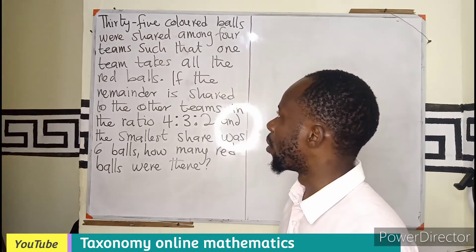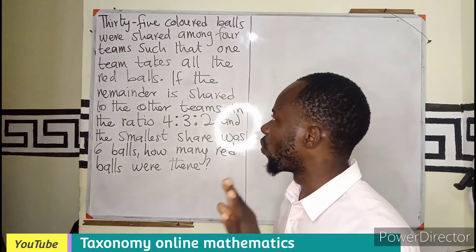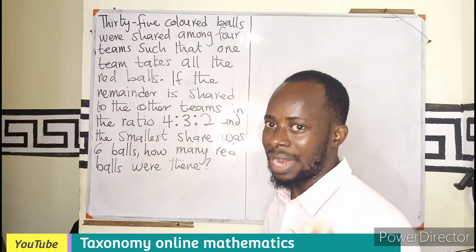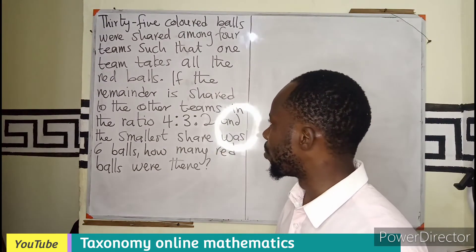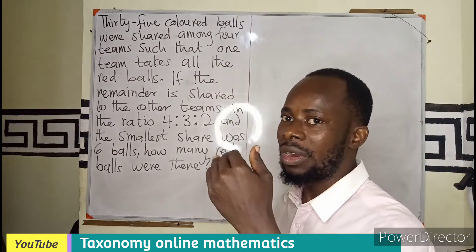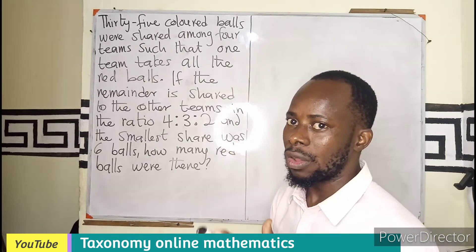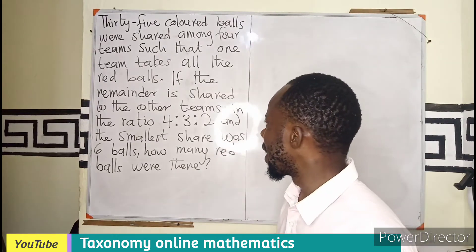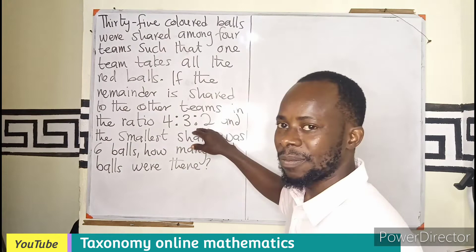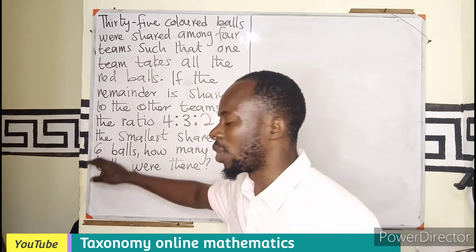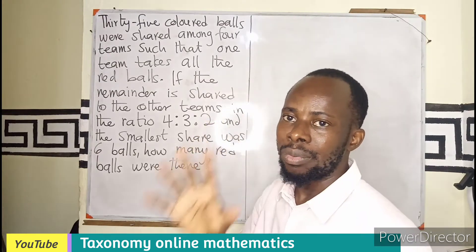Thirty-five colored balls were shared among four teams such that one team takes all the red balls. The colored are many, but all the red balls have been given to a particular team. Then if the remainder of the balls is being shared to the other teams in the ratio 4 is to 3 is to 2, and the smallest share was 6, meaning the team among the three that had the smallest share had 6 balls.